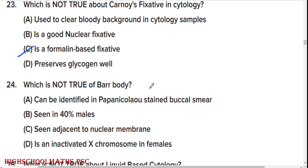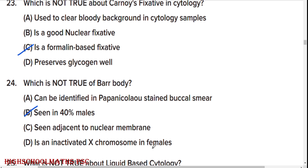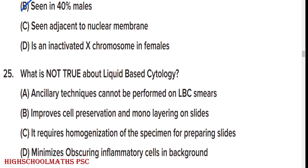Which is not true of Barr body? Option B: seen in 40% of males. True statements: can be identified in Papanicolaou stain and buccal smear; situated adjacent to nuclear membrane; is an inactivated X chromosome in females.